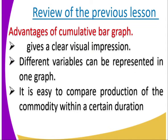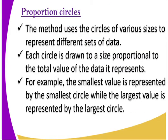Number three: it is easy to compare production of a commodity within a certain direction. The reason is that it represents each commodity in every bar, which is supposed to be similar. So you can be able to compare it very easily. Now let us look at today's lesson. We start by looking at what proportional circles are.